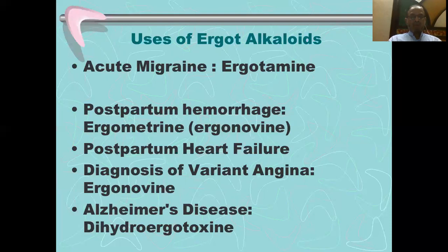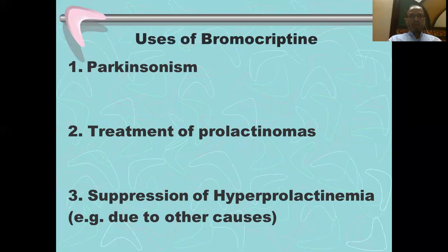Next use: postpartum heart failure — we will discuss later. Then, diagnosis of variant angina — ergometrine is used for provocation, and we will discuss both of these. Also Alzheimer's disease, sometimes using dihydroergotoxin. Then some specific uses of the dopamine agonists — bromocriptine being the prototype. The other D2 receptor agonists like cabergoline and pergolide have similar uses.